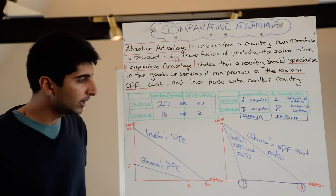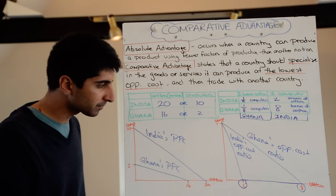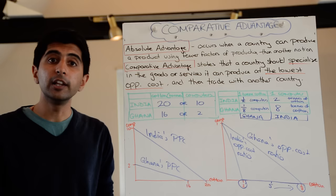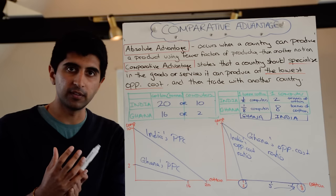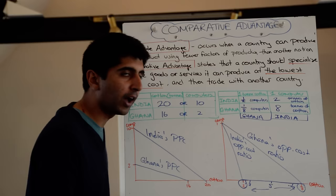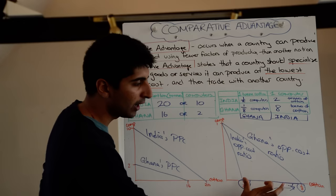One computer should cost between two and eight tonnes of cotton. An exchange rate that would benefit both countries equally would be one computer priced at five tonnes of cotton. The more we move towards eight tonnes of cotton for one computer, the more that benefits India — say the exchange rate is one computer to seven tonnes of cotton, India gets more cotton per computer sold, whereas Ghana has to pay quite a lot, still beneficial for both but more in India's favour. The more we move towards fewer tonnes of cotton per computer, the more it benefits Ghana. But as long as the exchange rate lies between the two opportunity cost ratios, it's always beneficial for countries to exploit their advantage.